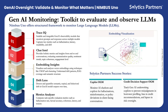At the core of Nimbus Uno's generative AI monitoring suite are powerful modules that deliver deep observability and control. TraceIQ captures the most granular details across prompts, responses, and their underlying metrics, including hallucination rate, grounding accuracy, and latency.